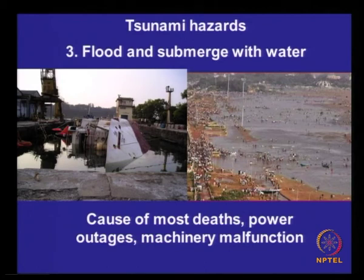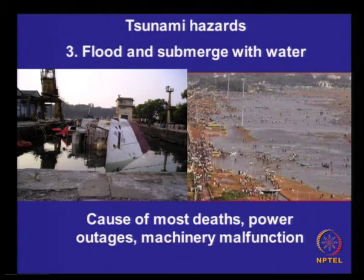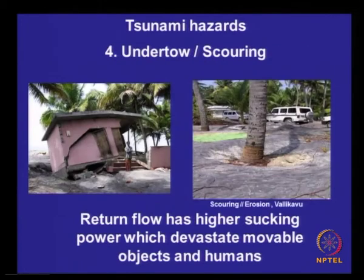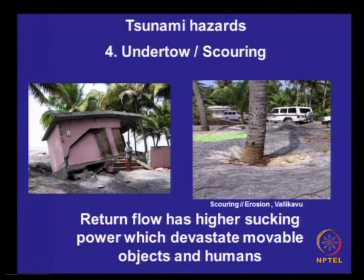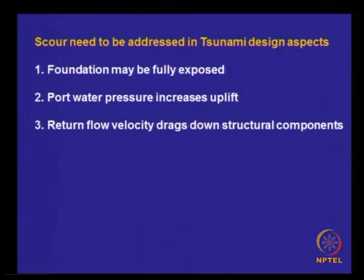This is flood submergence — because of so much sea water entering buildings, factories, and industries, you had short circuits taking place, and a lot of people died because of this problem. The tsunami undertow and scouring — look at the devastation to this building, the whole thing is toppled. The retaining water makes scour — this is only one example. There are several buildings which suffered scour and ultimately collapsed. Scour needs to be addressed in tsunami design aspects: foundation may be fully exposed, pore water pressure increases uplift, and return flow velocity drags down structural components.